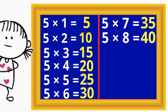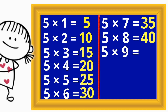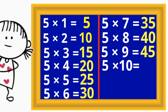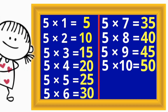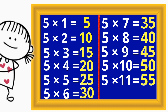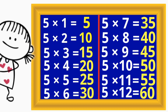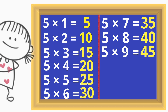5 x 8 is 40, 5 x 9 is 45, 5 x 10 is 50, 5 x 11 is 55, 5 x 12 is 60. This is the table 5 song.